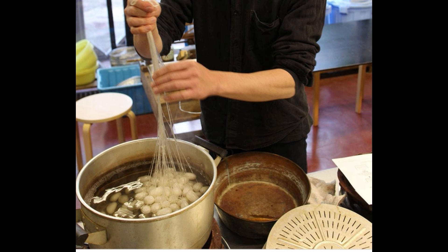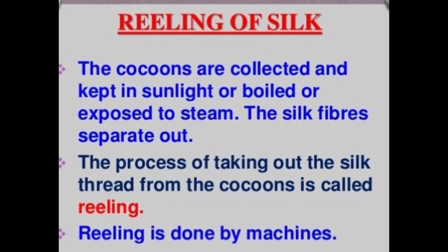After boiling, the silk fiber separates out; this is called raw silk. The process of taking out fibers from the cocoon for use as silk is known as reeling the silk. This process is done using machines.